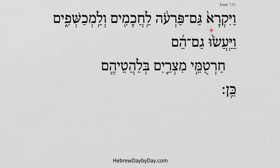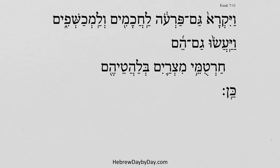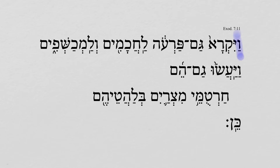Exodus 7-11. Now, in this context, Aaron has just thrown down his staff and it became a sea serpent. And we continue. And Pharaoh — even Pharaoh — called to the sages and to the sorcerers.